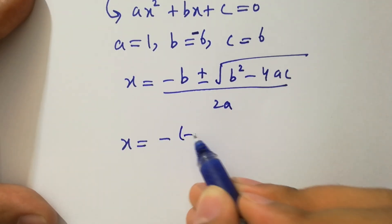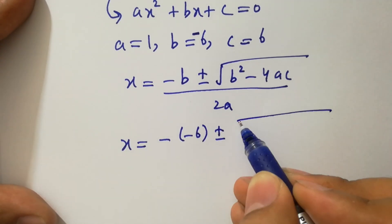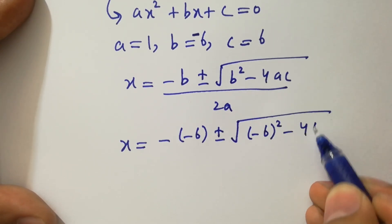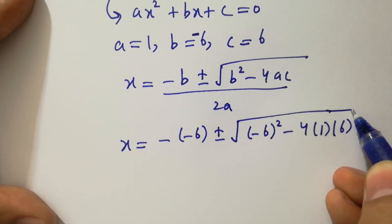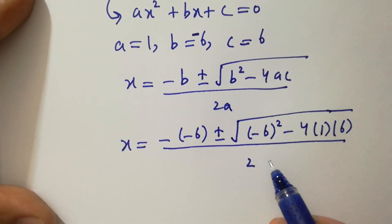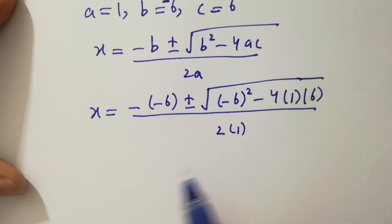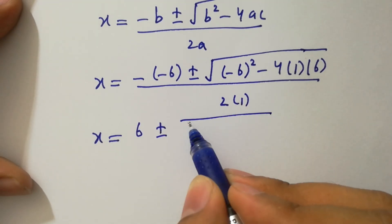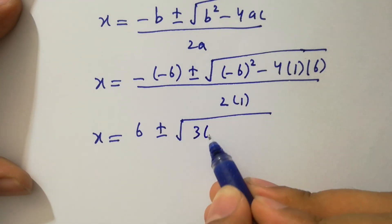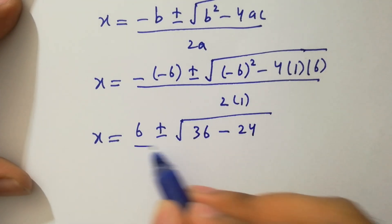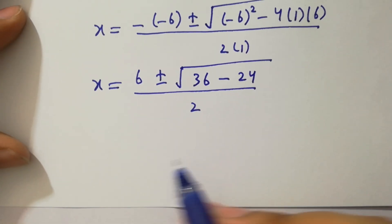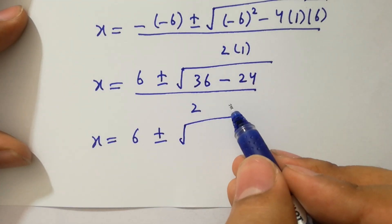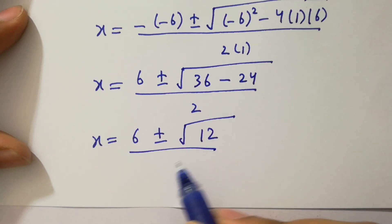Substituting: x equals minus (minus 6) plus or minus square root of (minus 6) squared minus 4 times 1 times 6, over 2 times 1. This gives x equals 6 plus or minus square root of 36 minus 24, over 2.